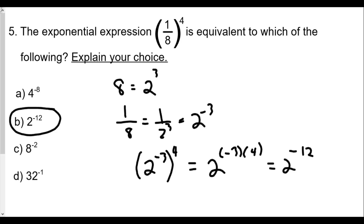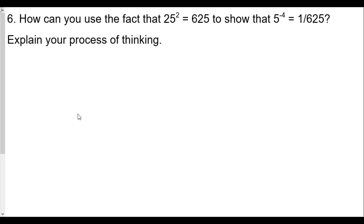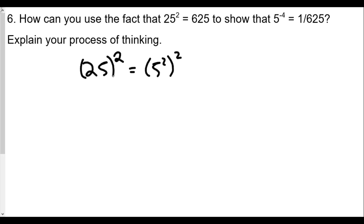Question six: how can you use the fact that 25 squared equals 625 to show that five to the negative four is one over 625? The key is that 25 is related to five — specifically, 25 squared is the same as five squared, squared, because 25 equals five squared. Using the power rule, five squared to the second power equals five to the two times two, which is five to the fourth — and that equals 625.